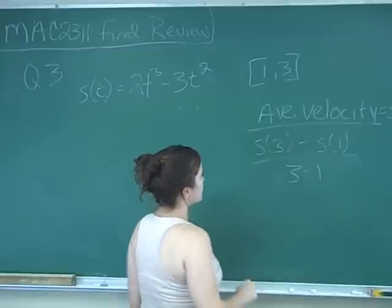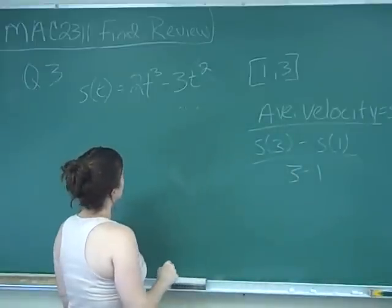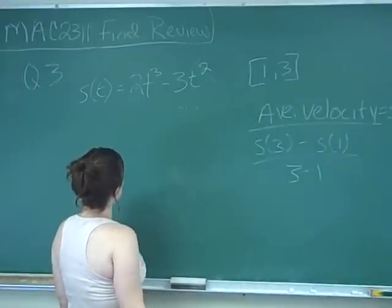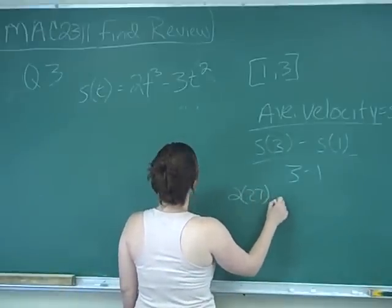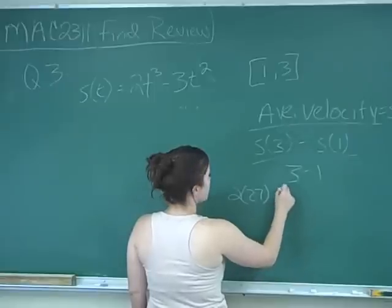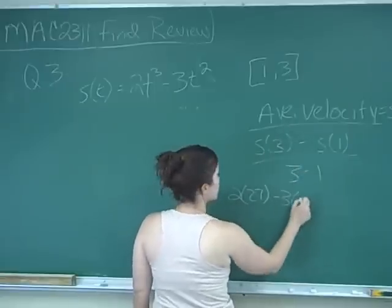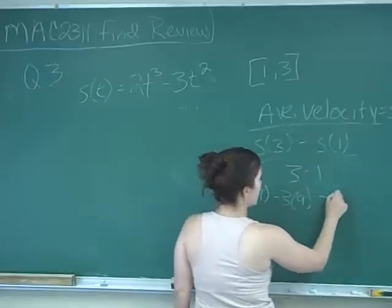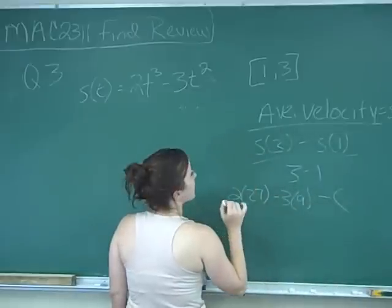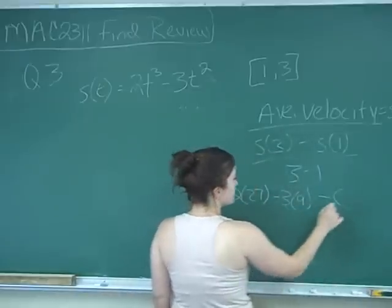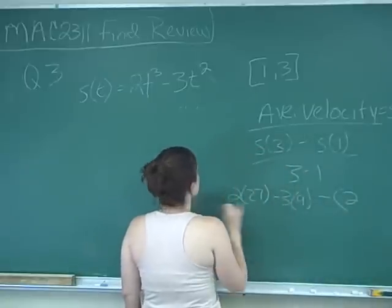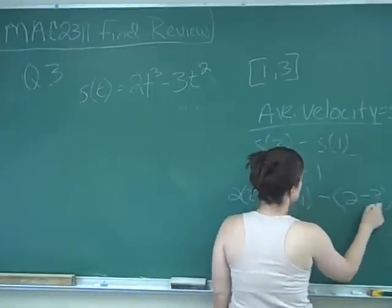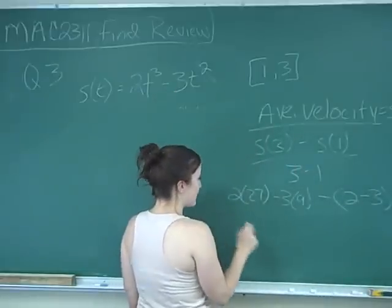So s(3) minus s(1) all over 3 minus 1. So if I plug in 3 to my s function, I get 3 cubed, which is 27 times 2, so it's 2 times 27 minus 3 times 3 squared, which is 9, minus 1 cubed is 1 times 2 is 2, and then 1 squared is 1 times 3 is negative 3.